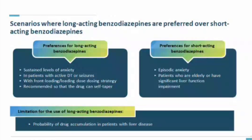Preferences for long-acting benzodiazepines include sustained anxiolysis, treatment of active delirium or seizures, and use of front-loading and loading dose strategies. Short-acting benzodiazepines are preferred for episodic anxiety, elderly patients with significant liver function impairment — using agents that bypass hepatic metabolism like oxazepam or lorazepam. A key limitation of long-acting benzodiazepines is drug accumulation risk in patients with liver disease, requiring caution when liver function is compromised.